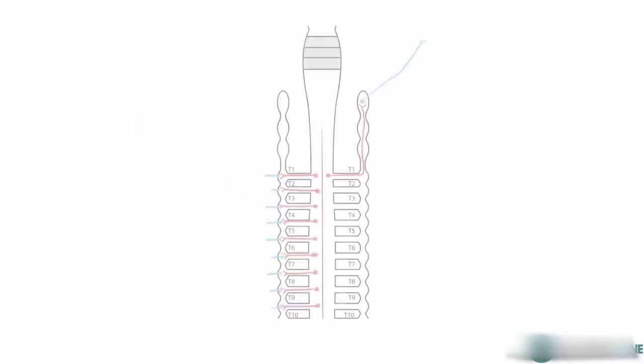Coming on to the thoracic viscera, these are supplied by sympathetic outflow from spinal regions T1 to T4. And the organs in the thorax are supplied by various plexuses.